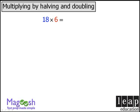So in this example here, we can create a simpler product by taking 18 and halving it to get 9, and then taking our 6 and doubling it to get 12. Now if we know our 12 times tables, we know that this is equal to 108.